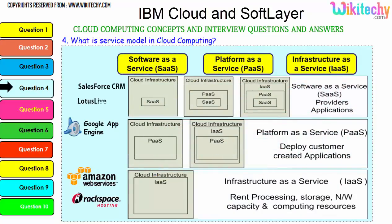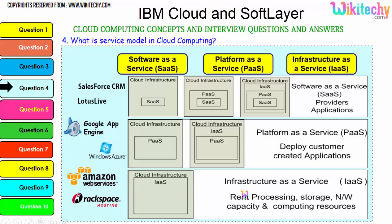For Software as a Service, the cloud infrastructure hosts the software placed on the operating system within the infrastructure. For Platform as a Service, you are given a platform OS on the server and you can put any application or software you want. For Infrastructure as a Service, you are given the server and can install whatever OS and applications you need — only application-level changes can be done in SaaS. Examples: SaaS — Lotus Live and Salesforce CRM; PaaS — Windows Azure and Google App Engine; IaaS — Amazon Web Services and Rackspace Hosting.